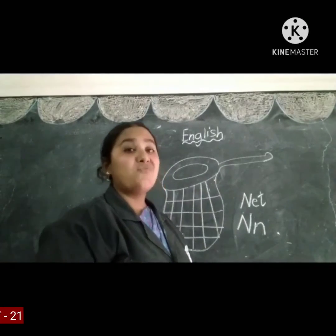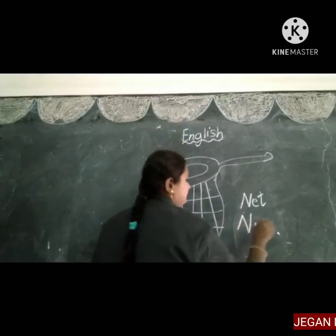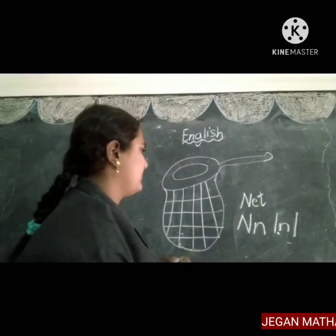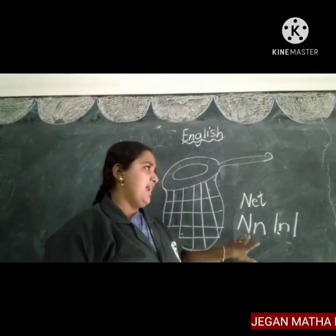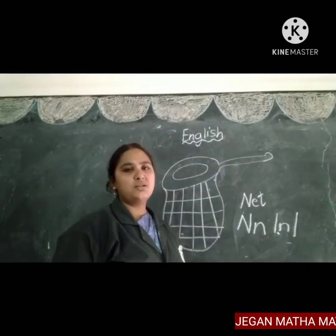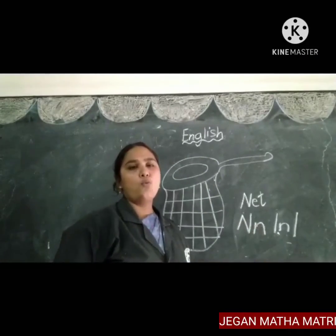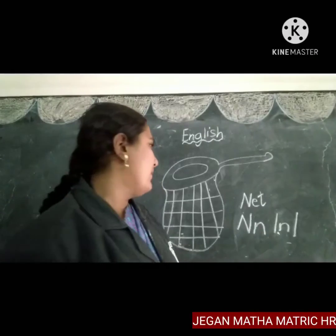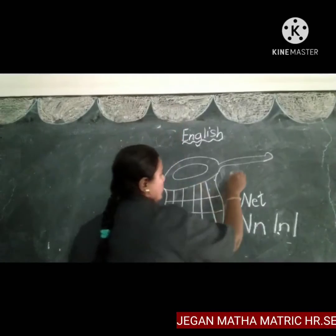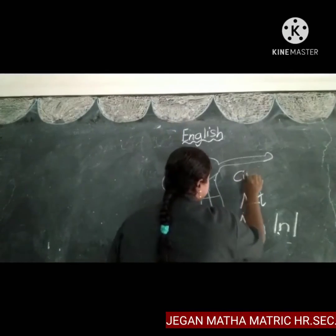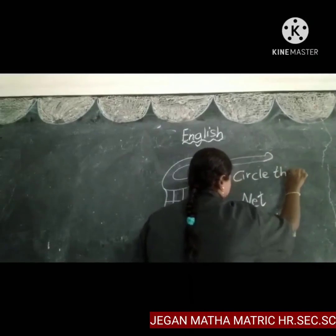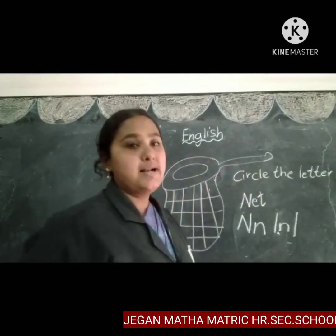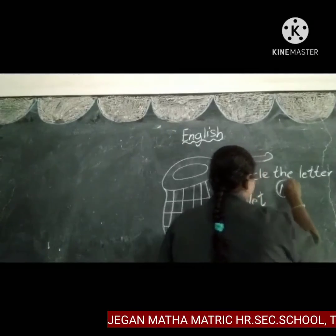What's the sound for N, children? N. Come on, let's say again. Capital N. Small N. What's the sound for N? N. Now let's circle the letter N. What are we going to do? Circle the letter N.